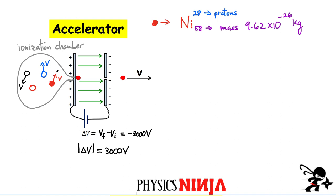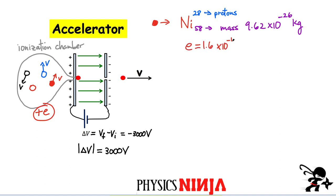Let's first look at the accelerator region. Typically there's an ionization chamber placed before the accelerator, where we might place a gas containing different isotopes of nickel. We're going to focus on nickel-58. Nickel has 28 protons, and the neutral atom has 28 electrons. We remove one electron, so these ionized atoms will have a positive charge equal to +e.